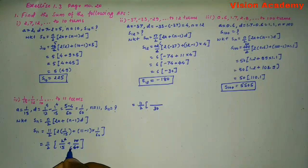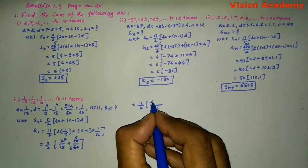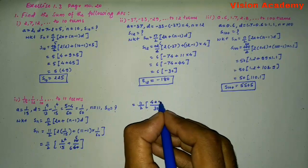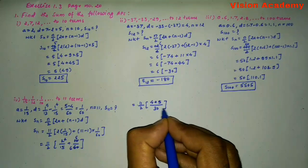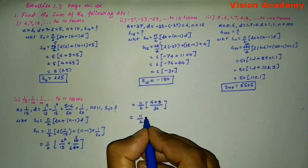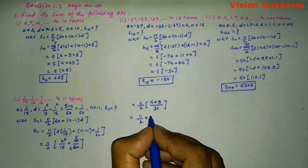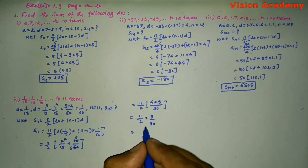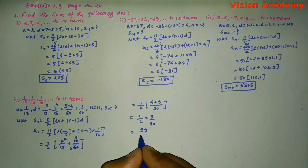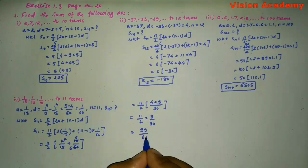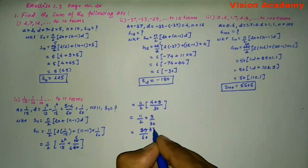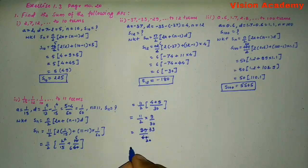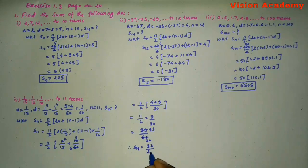Here, 15 twos are 30, and 6 fives are 30. So 2 twos are 4, plus 5 ones are 5, which is equal to 11 by 2 into 4 plus 5 is 9 by 30. Here, 11 nines are 99, divided by 2 into 30 is 60. Simplifying, 3 threes are 9, divided by 20. Therefore, S_11 is equal to 33 divided by 20.